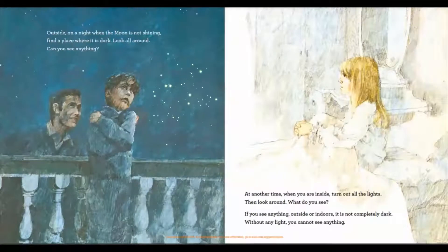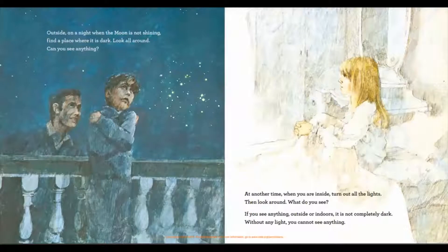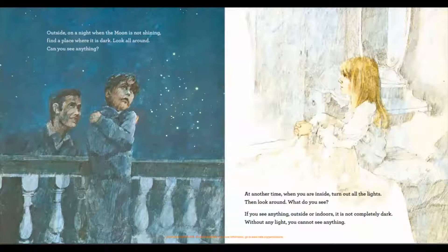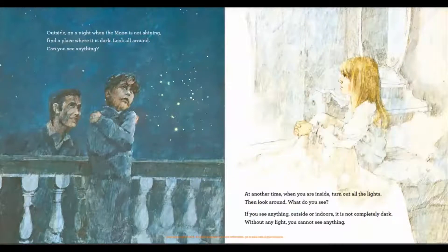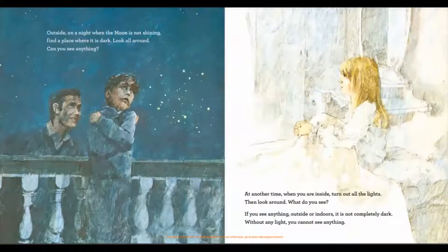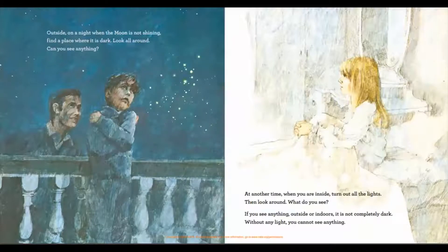Outside on a night when the moon is not shining, find a place where it is dark. Look all around. Can you see anything? At another time when you are inside, turn out all the lights, then look around. What do you see? If you see anything outside or indoors, it is not completely dark. Without any light, you cannot see anything.